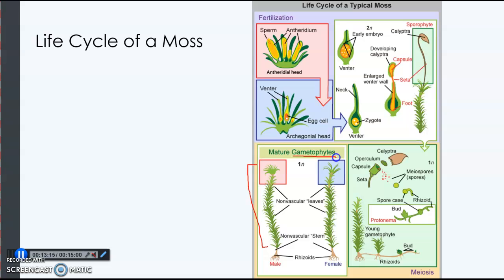There is a male gametophyte as well as a female gametophyte. The male gametophyte contains the antheridium, which produces the sperm — the sperm have flagella and can swim. The female gametophyte contains the archegonium, which produces the egg. The sperm swim to the egg, and when they fuse the sporophyte grows up out of the female gametophyte. The sporophyte is a stalk with a capsule on the end. The capsule is called the calyptra, and the stalk is called the seta.